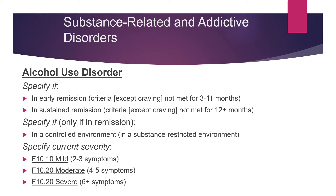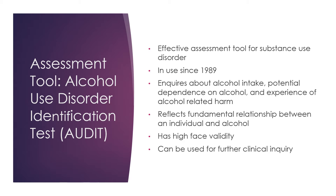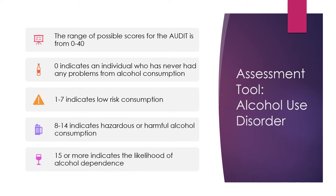As mentioned, he has met the criteria for moderate severity in his alcohol use disorder. An effective assessment tool for substance use disorder is the AUDIT — Alcohol Use Disorders Identification Test — used since 1989, which inquires about alcohol intake, potential dependence, and experience of alcohol-related harm. The range of possible scores is 0 to 40: 0 indicates no problems, 1–7 indicates low-risk consumption, 8–14 indicates hazardous or harmful consumption, and 15 or more indicates the likelihood of alcohol dependence.